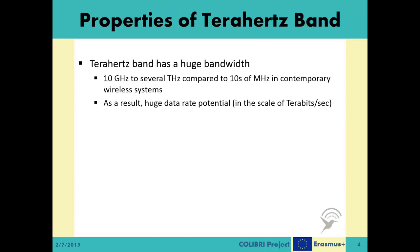The terahertz band has one huge advantage over other microwave electromagnetic waves: a bandwidth of between 10 gigahertz to several terahertz that is unused by any other technologies. As a comparison, current Wi-Fi systems utilize a bandwidth of only 10 or 20 megahertz. Consequently, the terahertz band and terahertz signaling offers extremely high data rates.